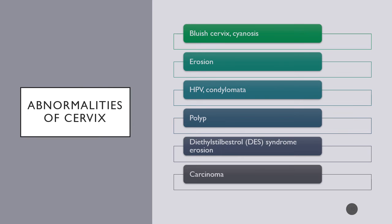When performing a speculum cervical exam, abnormalities of the cervix include cyanosis or bluish discoloration, which can be normal during pregnancy (Chadwick's sign) but is abnormal with cancer, venous congestion from a pelvic tumor, heart failure, or significant hypoxia—the cervix itself will be blue just like nail beds. The area around the os can become eroded, which is more common with age but should be investigated further to rule out disease.